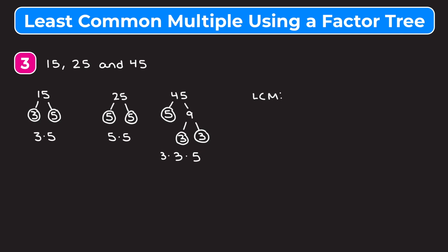Now we find the least common multiple. Three shows up in the prime factorization for 15 and for 45, but not in 25 — that's okay, we take every number that shows up in any of the three prime factorizations. Three shows up more in 45 (twice), so we use the two 3s from the 45 factorization: 3 × 3. Five shows up in all three factorizations, but it shows up the most in 25 (twice), so we multiply by 5 × 5.